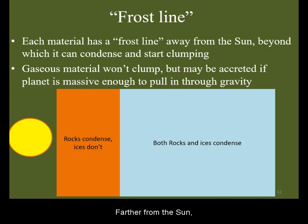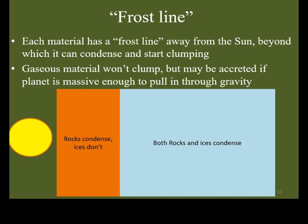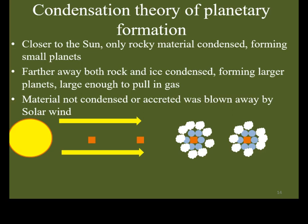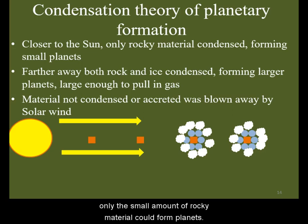Farther from the sun, beyond what is known as the frost line, both the rocks and the ices could remain in condensed form and stick together to form protoplanetary cores. Close to the sun, therefore, only the small amount of rocky material could form planets.